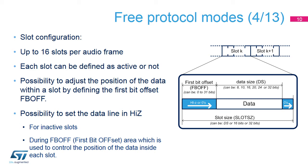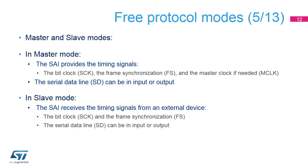The SAI allows control of the position of the data inside each slot, and to set the unused parts of the slots to high Z if needed. This function can be helpful when the data line is shared between several devices. In master mode, the SAI can generate the master clock, or MCLK, depending on the audio system configuration. This master clock provides a reference clock to the external audio codecs. In master mode, the SAI generates the frame synchronization signal, or FS, and the bit clock, or SCK. The data line SD can be either input or output.